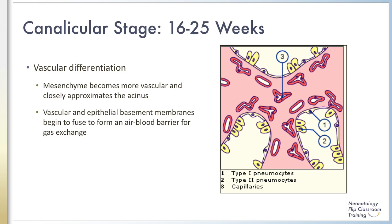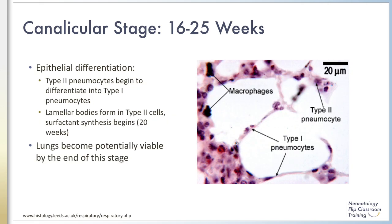The mesenchyme becomes highly vascular and capillaries more closely approximate the acinus. Eventually, the vascular and epithelial basement membranes begin to fuse and form an air-blood barrier for gas exchange. The primitive type 2 pneumocytes present at the end of the pseudoglandular stage begin to differentiate into type 1 pneumocytes. Type 1 pneumocytes are thinly spread across the alveolar surface as shown in the figure on this slide. The glycogen-rich type 2 pneumocytes begin to form lamellar bodies in the cytoplasm, and surfactant synthesis begins at about 20 weeks.